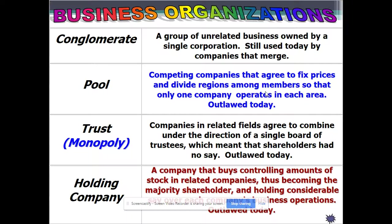A pool is where competing companies agree to fix prices — later declared illegal. A trust is like a monopoly: run by a single board of trustees, or where competing CEOs serve on each other's boards to fix prices, as with AT&T and Verizon. That's a conflict of interest and not good for consumers. A holding company — Cornelius Vanderbilt was great at this — involves buying the stocks of competing companies until you're the majority shareholder, owning it without technically owning it.